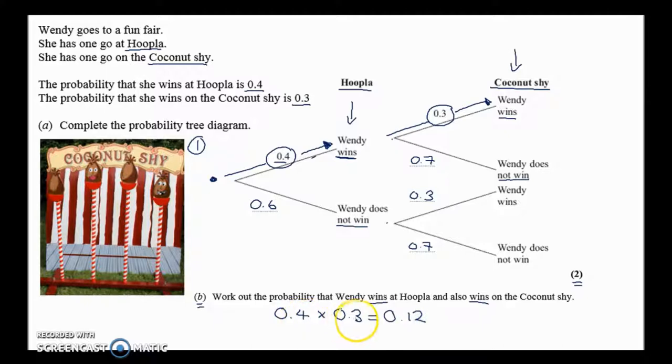You see you've got 4 times 3, which is the 12. And you've also got one decimal place there and one decimal place there, so make sure that you've got 2 in your answer. Okay, I hope that's helpful. We'll move on to the next question.